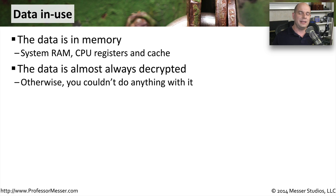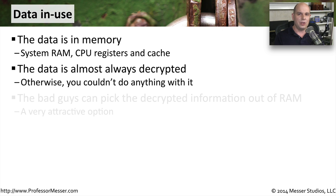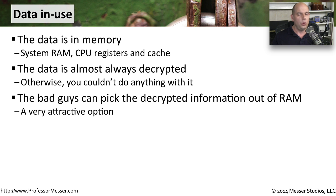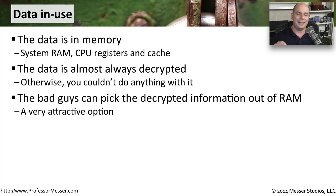So when you bring this into the system memory and it is data in use, it is almost always in a decrypted form. This means that the bad guys, if they know where to look, could pull that decrypted data right out of memory and be able to store it, manipulate it, or do anything they'd like with that information. This is a very attractive option for the bad guys. And if they know that they can't access the data across the network and they can't access the data at rest, then perhaps getting to the data in use may be a perfect place to go.